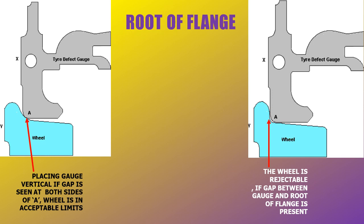Root wear is measured by placing the gauge just at the root. After placing, if we find a gap on either side of point A then the wheel is within acceptable limits. However, if we place the gauge so that this surface and this surface are parallel to each other and we find a gap at the root, then the wheel lies at the rejection limit.